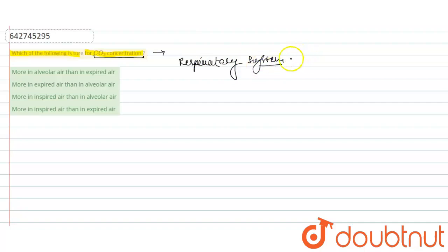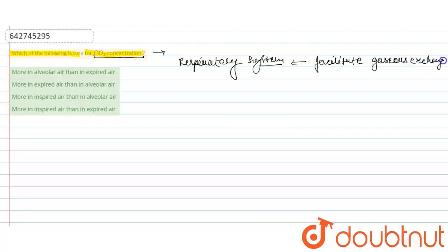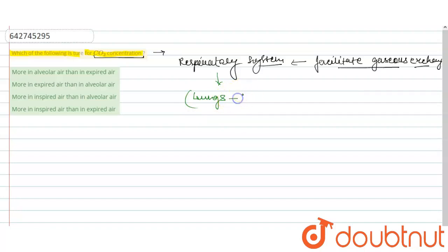Our respiratory system plays a very crucial role in gaseous exchange in our body. This is a very important biological process. For gaseous exchange in the respiratory system, the very important organs in the human system are the lungs, and inside the lungs, the alveoli.